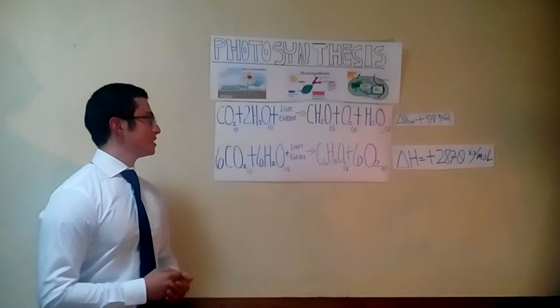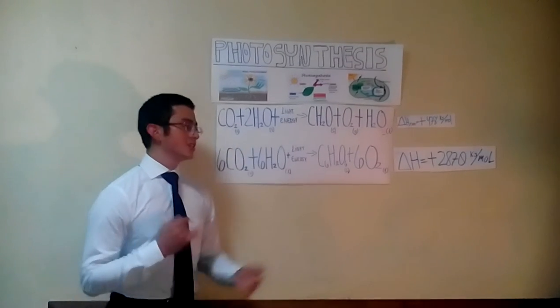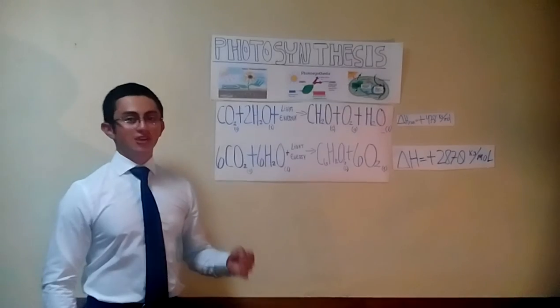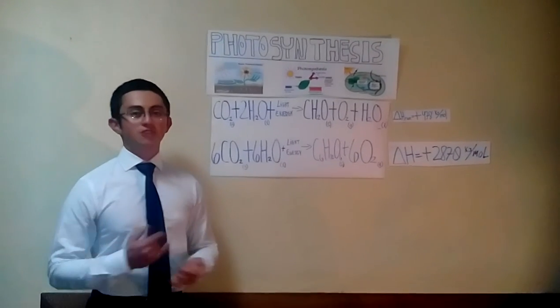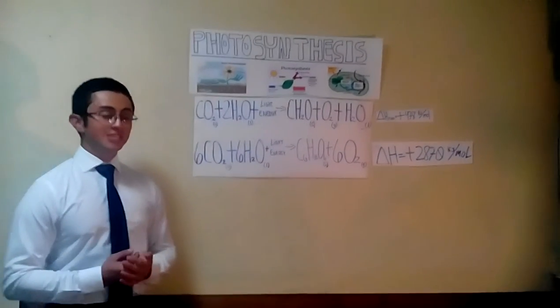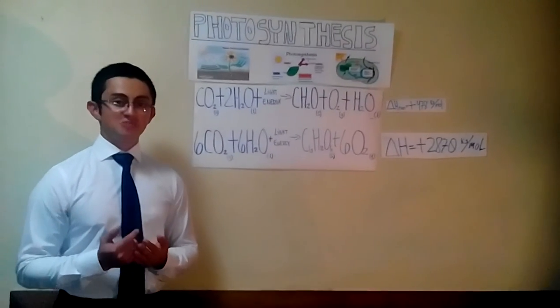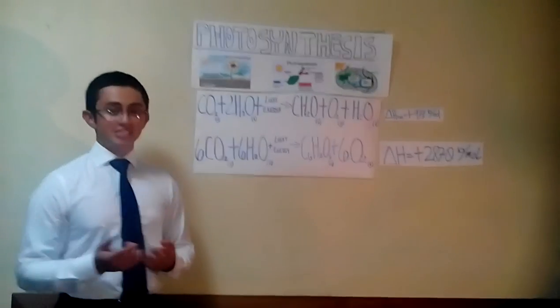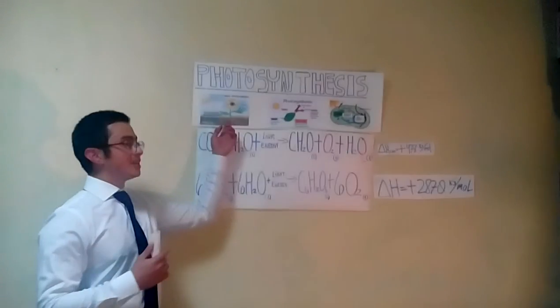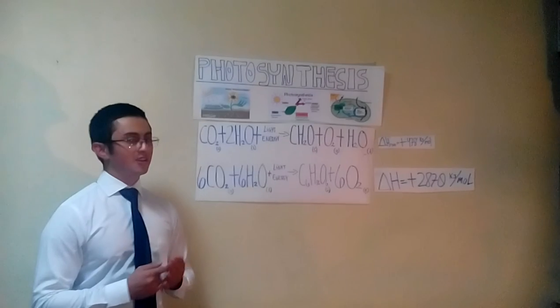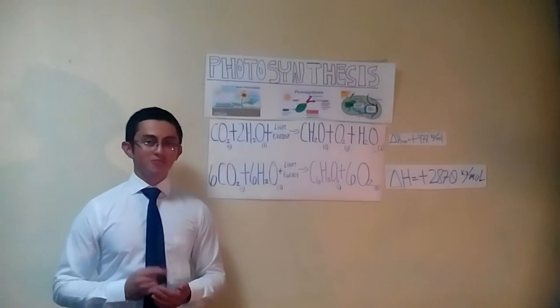So right now, it begins the chemical part. This equation right here is the most basic empirical equation of photosynthesis. Photosynthesis is an endothermic reaction, which means that the system, that is the plant, absorbs energy. So the enthalpy of reaction must be positive.